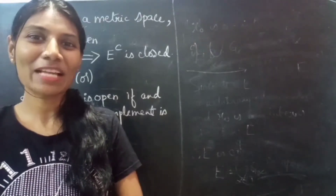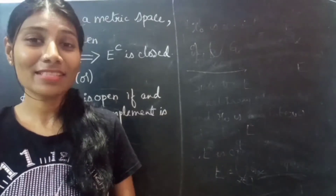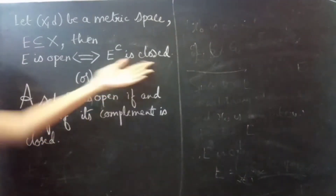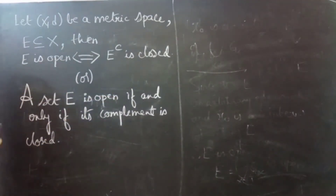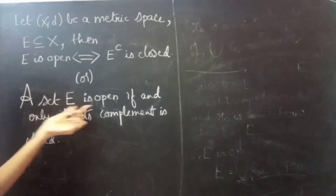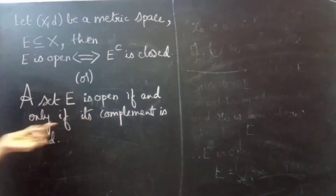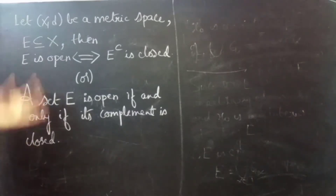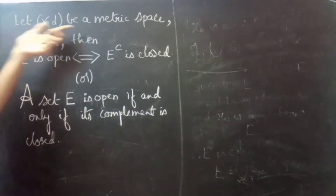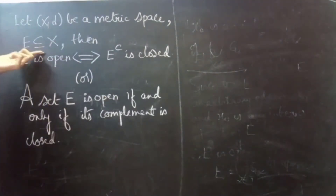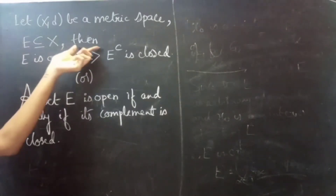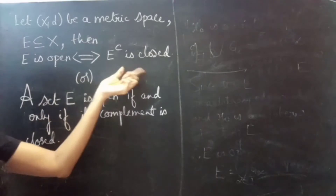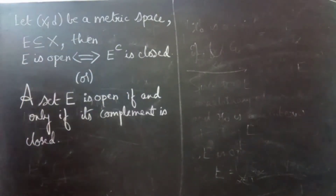Hello everyone, this is Yeh Kalpana here. In this video, we are going to see a theorem on closed and open sets. A set E is open if and only if its complement is closed. Let (X, d) be a metric space and E a subset of X. Then E is open if and only if E complement is closed.